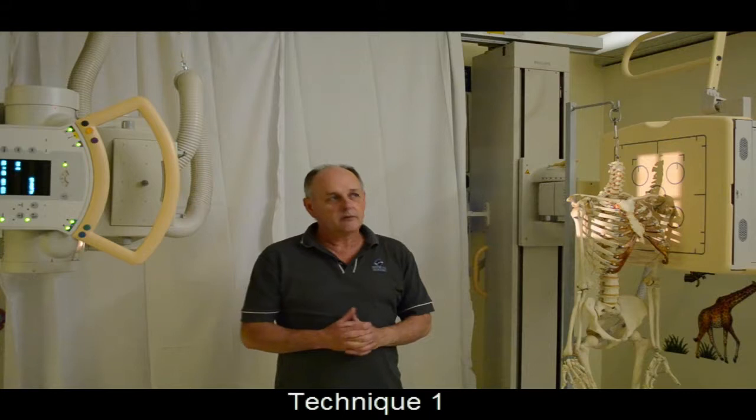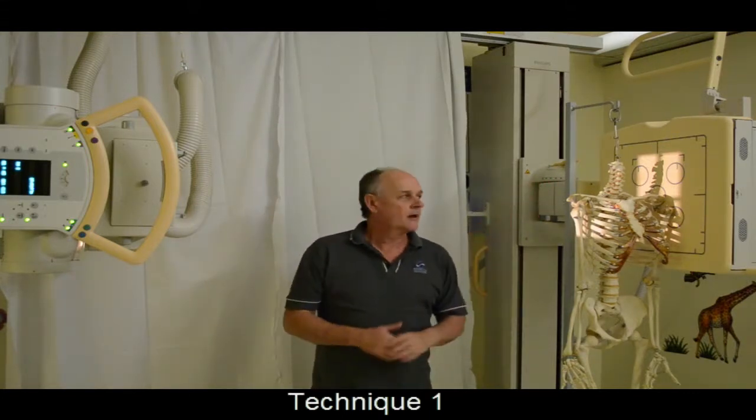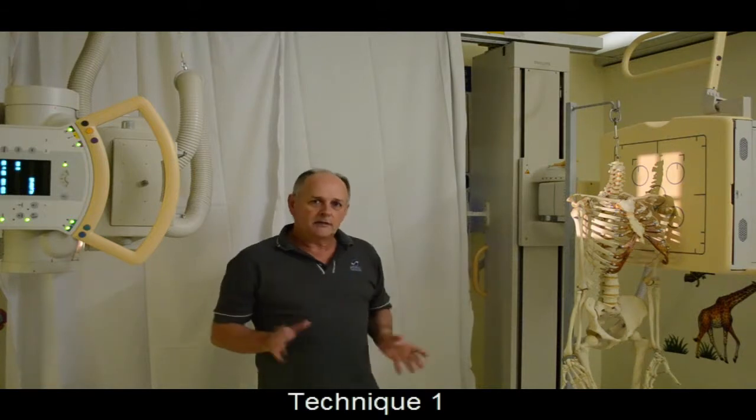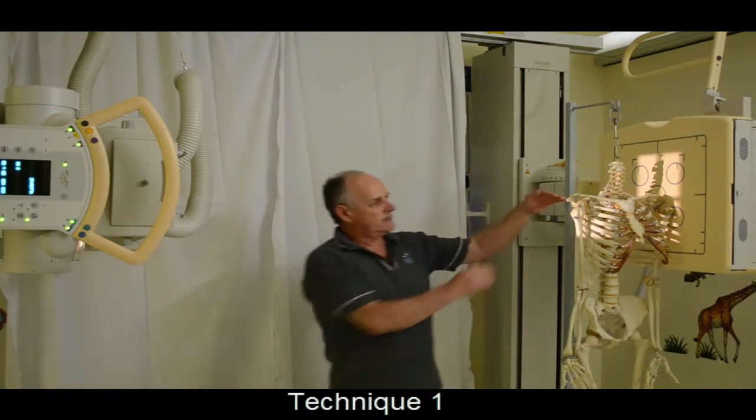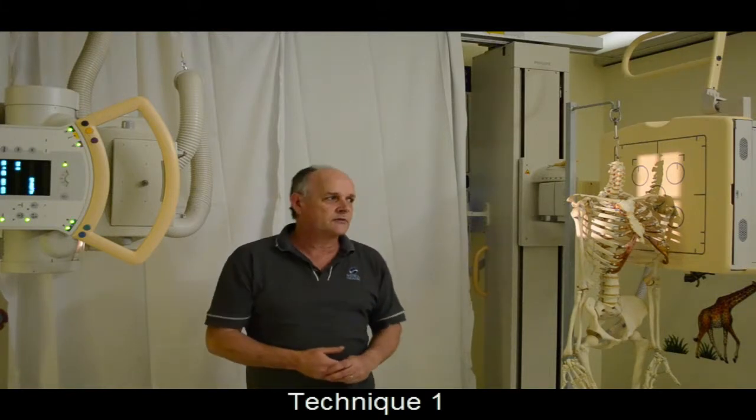This has advantages in terms of clearing C7 from the humeral heads. The disadvantage of this technique is that there is radiation of the thorax which is not necessary for demonstration of C7.